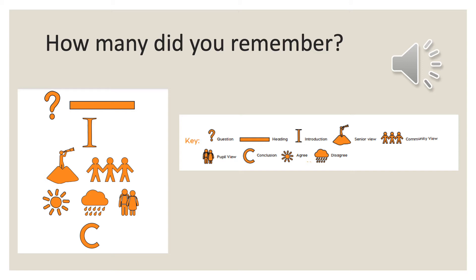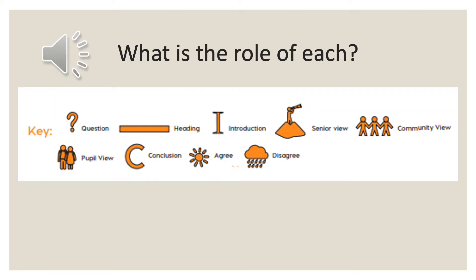Well done if you managed to remember all of those. Just a reminder of the role of each: a key question that needs to be answered, a heading that gives us more information, an introduction to put forward opposing views, senior views — those higher views — community views, those that are being affected, pupil views, and a conclusion which brings everything together, agree and disagree statements. They're all important in their own right, and without each of them we cannot build the perfect shape of a balanced argument.